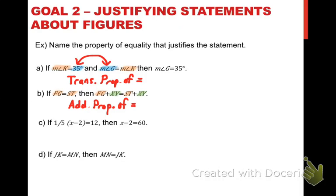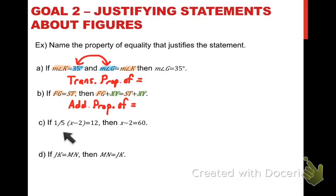Here's another property we used in the last video. This says if one-fifth of the difference of X and two is equal to twelve, then X minus two is equal to sixty. This was simply an equation with nothing to do with distances or angle measures. What happened was we cancelled out the one-fifth from the left side of this equation. You cancel out one-fifth by multiplying by five, and twelve times five gives you sixty. So what happened there was we used the multiplication property of equality.